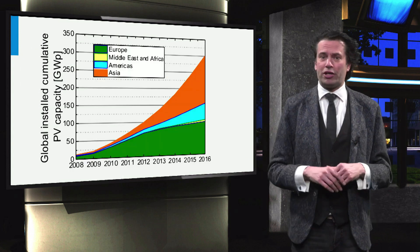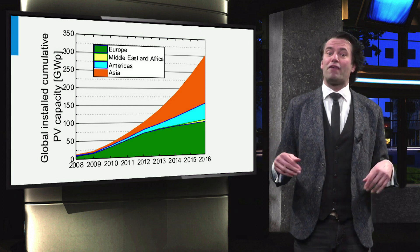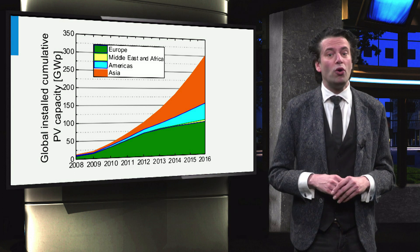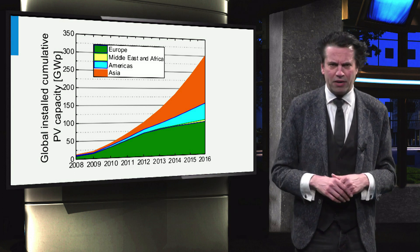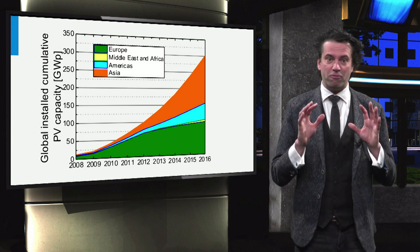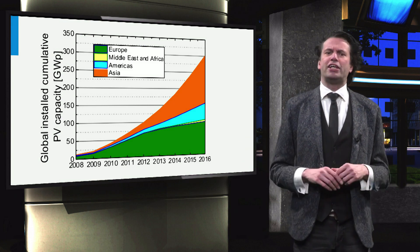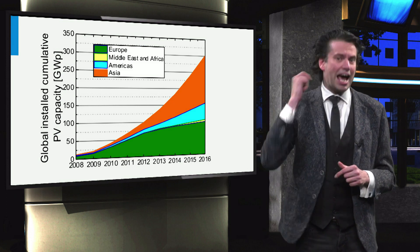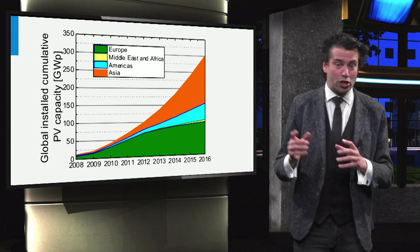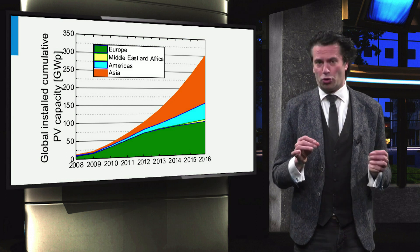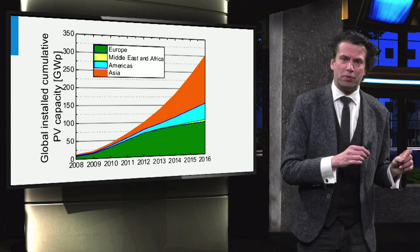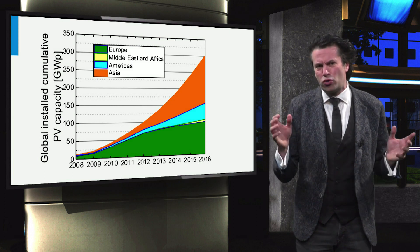The next graph shows the worldwide cumulative installed PV power. Now the different colors reflect different regions in the world. Orange corresponds to Asia, green to Europe, blue reflects North and South America, and yellow corresponds to the Middle East and Africa. The Asian region has the largest amount of PV power installed. The main drivers are China and Japan. China has shown an unprecedented increase in installed PV capacity from 2010 to 2017. Europe is now the region with the second most PV power installed.